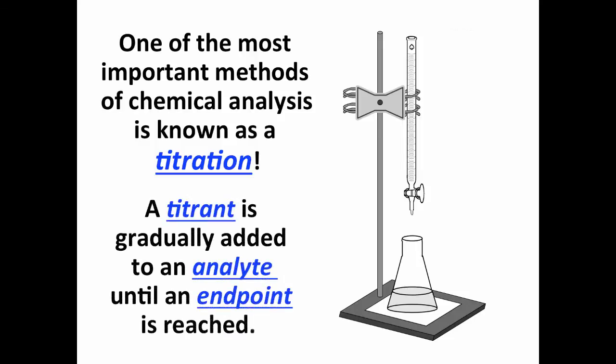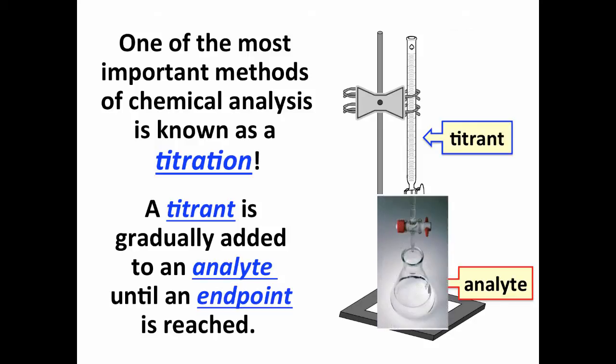In a titration, we have a titrant that is gradually added to an analyte until we reach an endpoint. And typically, the endpoint is something we will be able to see a color change occur. So we have a clear colorless solution, for example, and the solution turns pink.